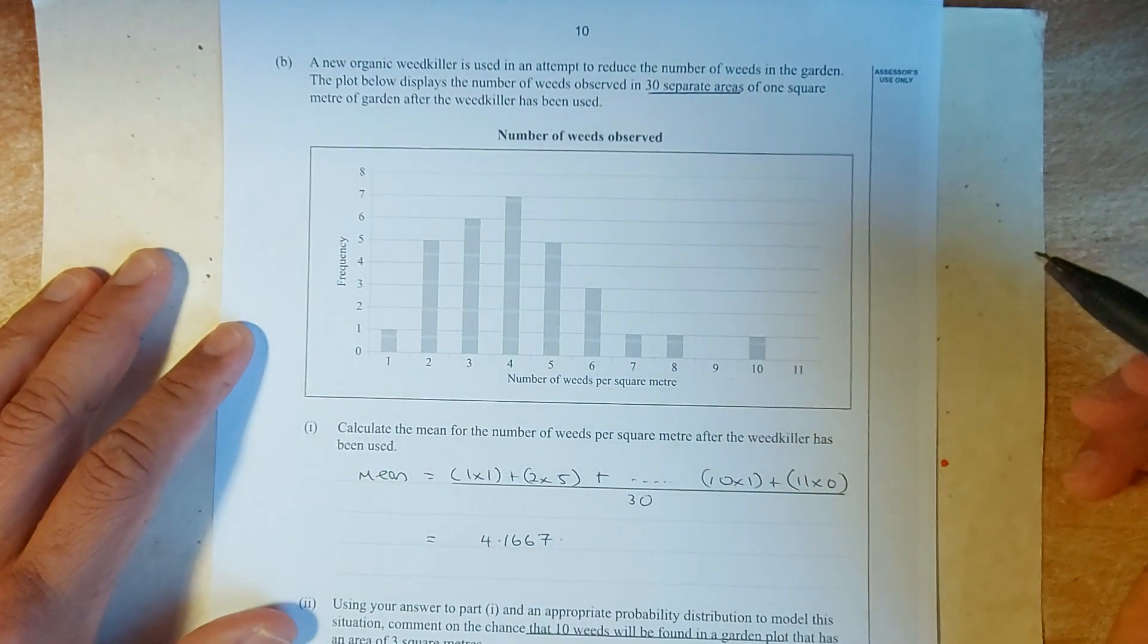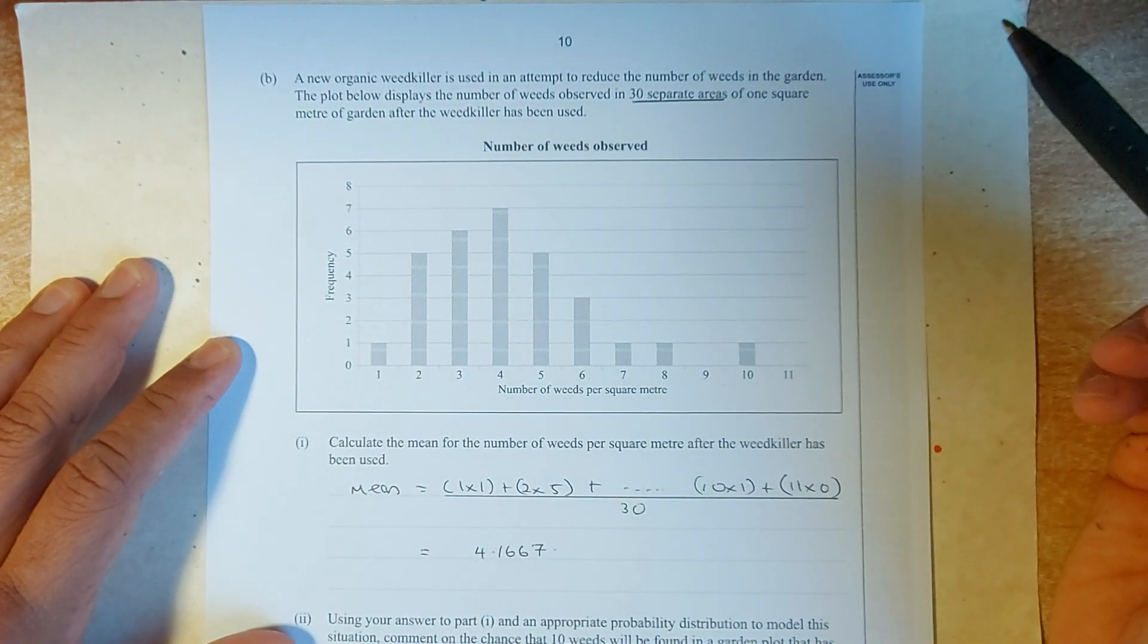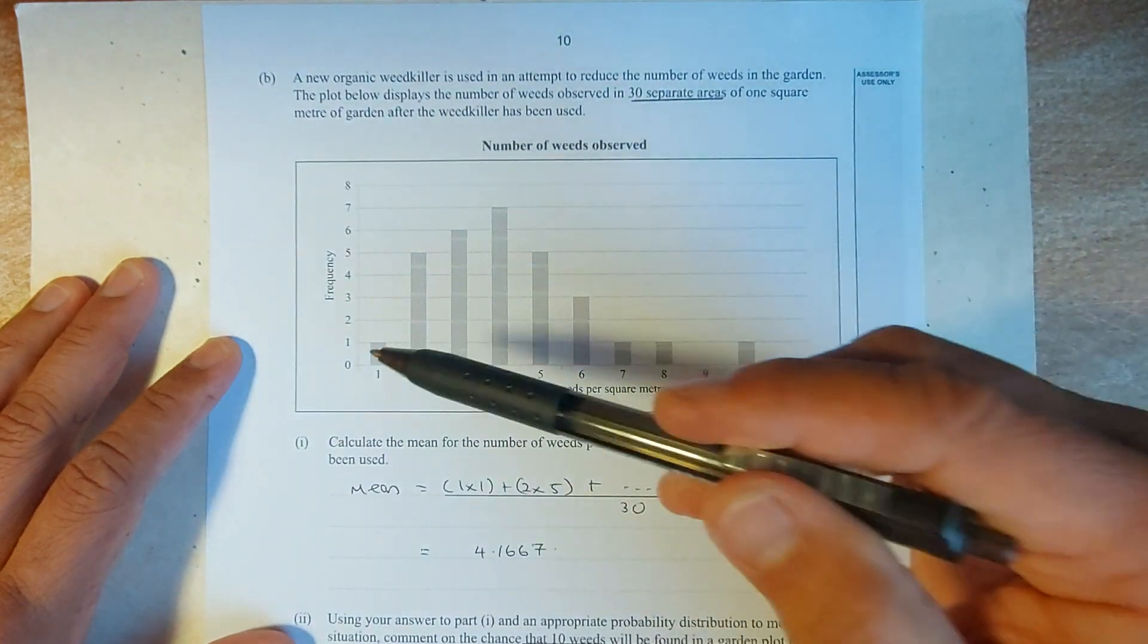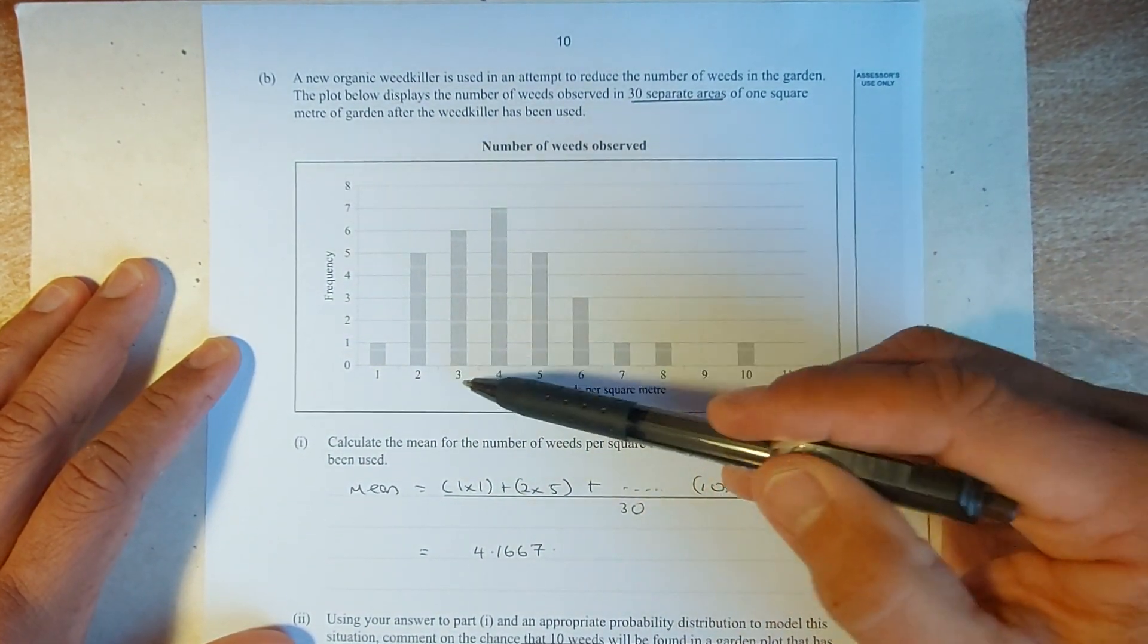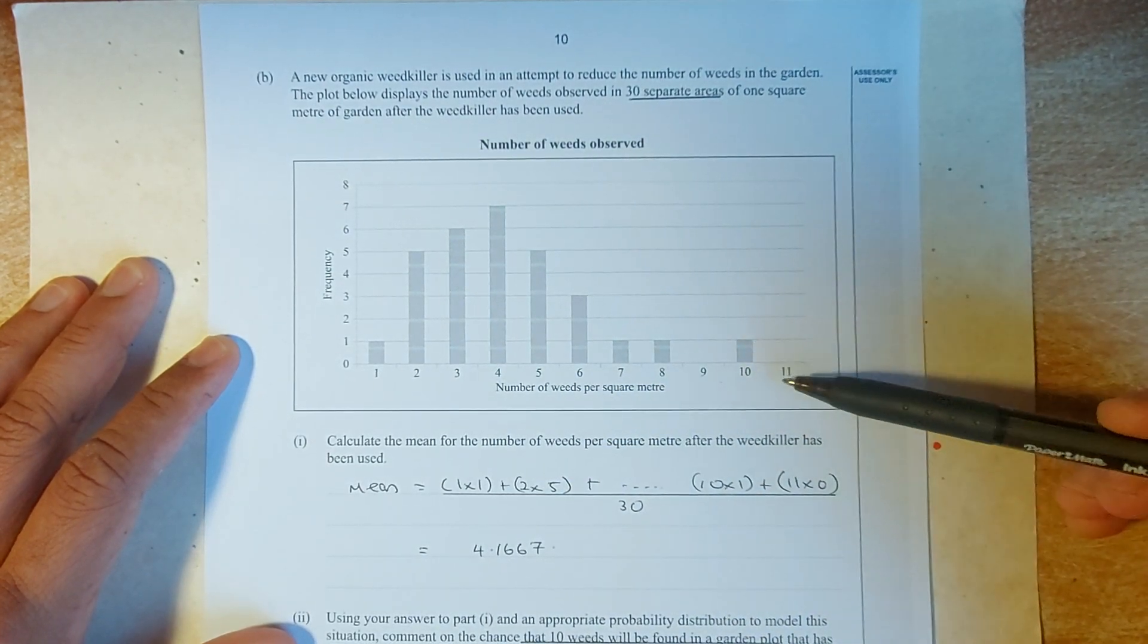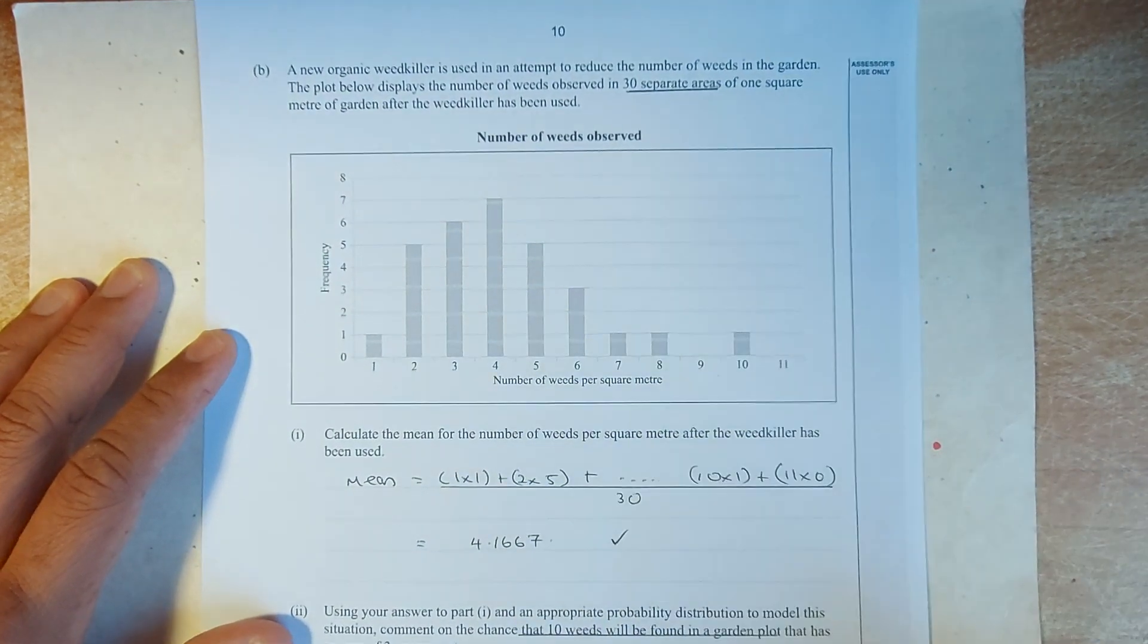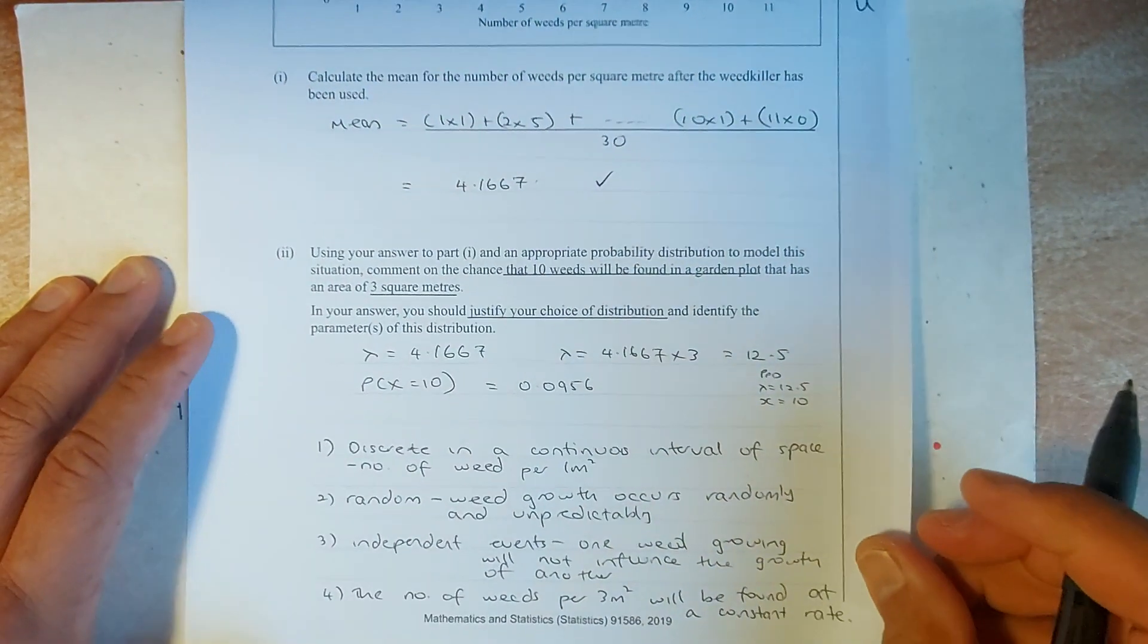Now, we are going to calculate, given this graph, we are going to calculate in 30 separate areas, what is the average number of weed. So, the same thing. You need to know, you calculate 1 times 1, 2 times 5, 3 times 6, and so on. And 10 times 1, 11 times 0, and divide by 30. And the number of weed is 4.1667. And that will give you an achieve.